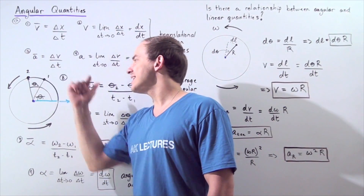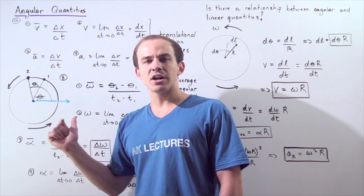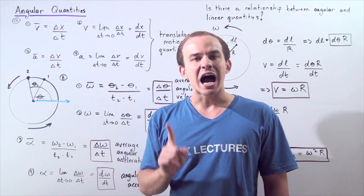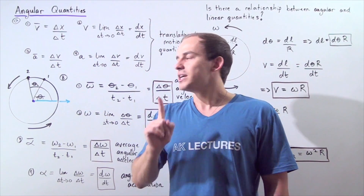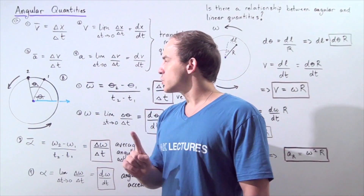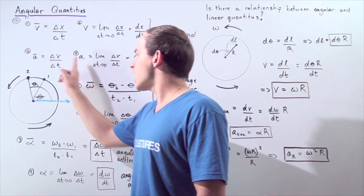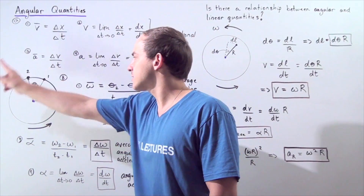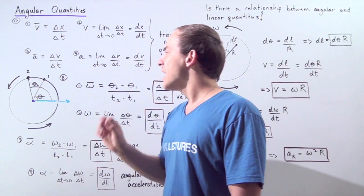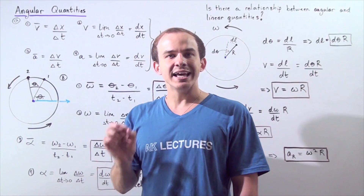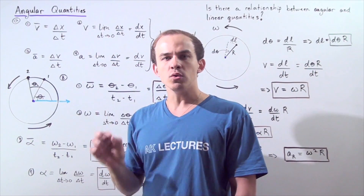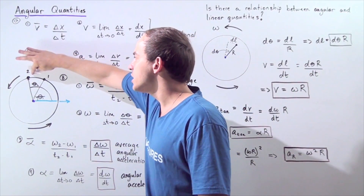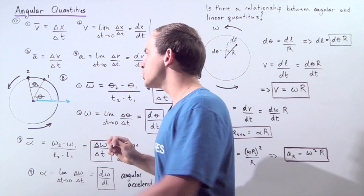When the object rotates in the clockwise direction, that is said to be the negative direction. So let's suppose our object is rotating in the positive direction, and we choose a point that rotates from point one to point two.